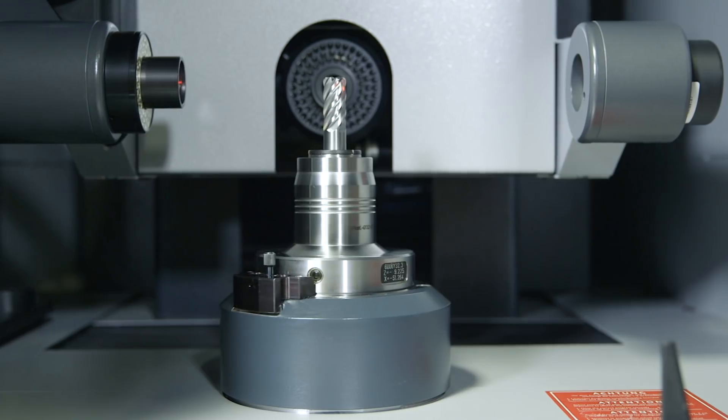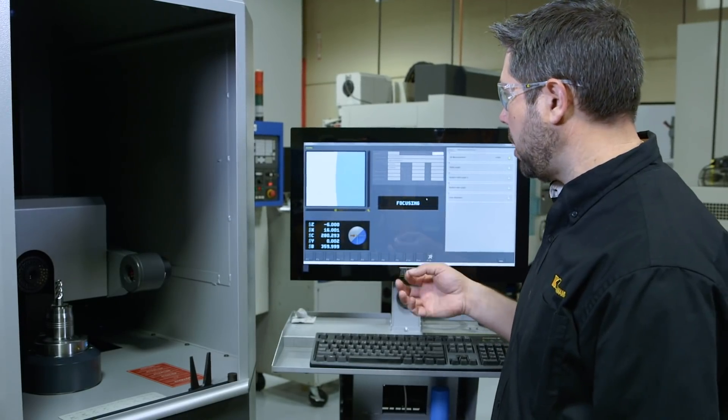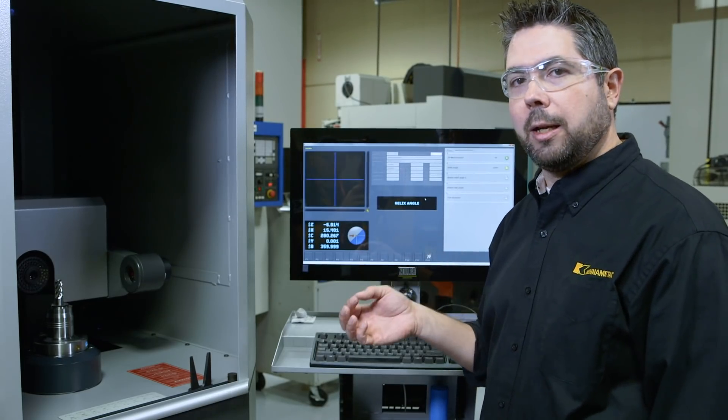Found the edge. It's going to move in. Now it needs to find the actual flute edge. And from that, we can start going through and measuring all the geometry related to that edge.